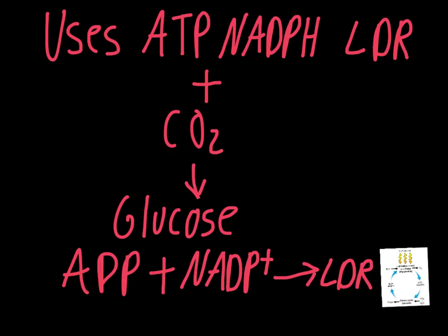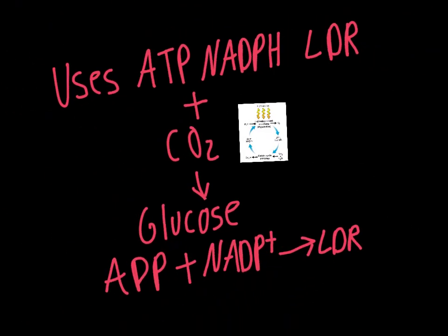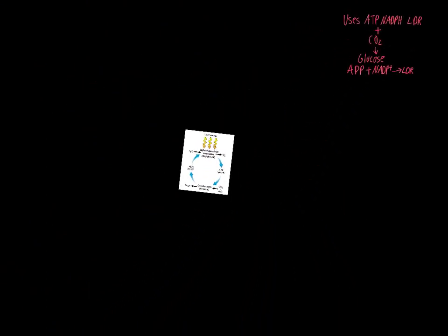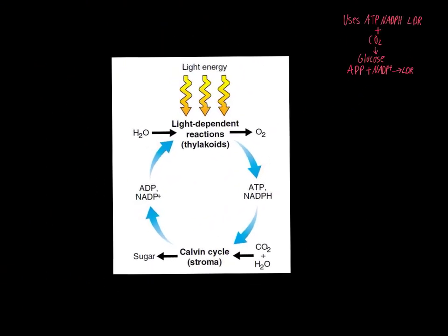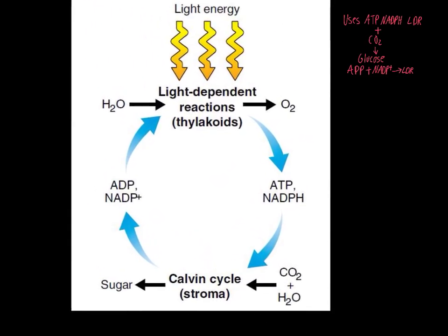To bring everything full circle — when we first started talking about this chapter, I used this overview diagram. This is where everything started for us. We talked about how part of this process happens in the light-dependent reactions, and the other part is the Calvin cycle.